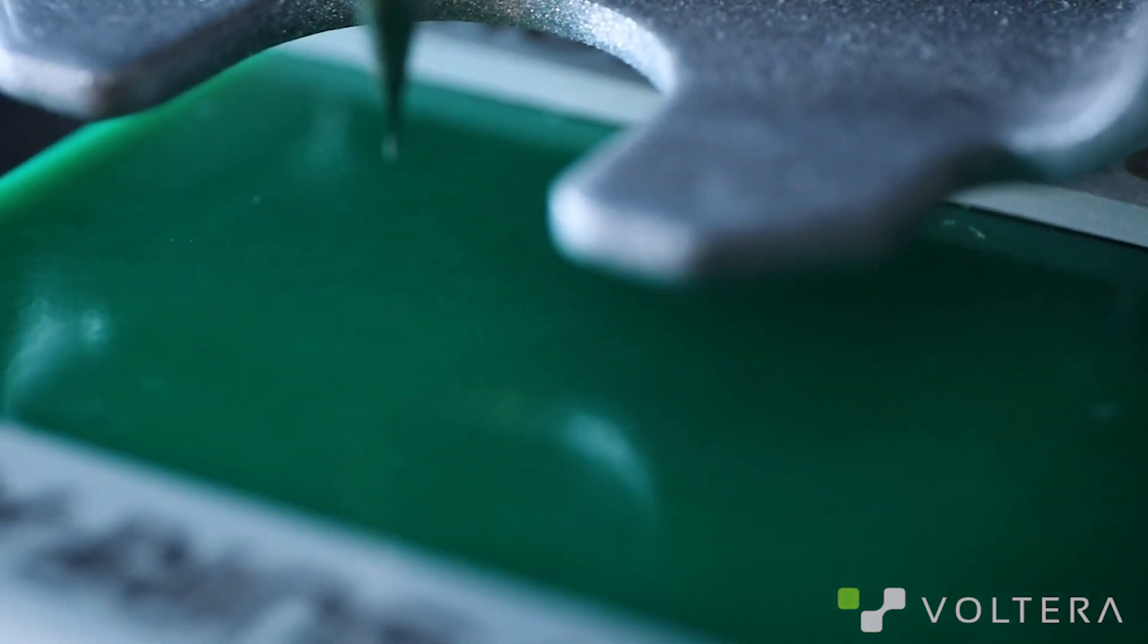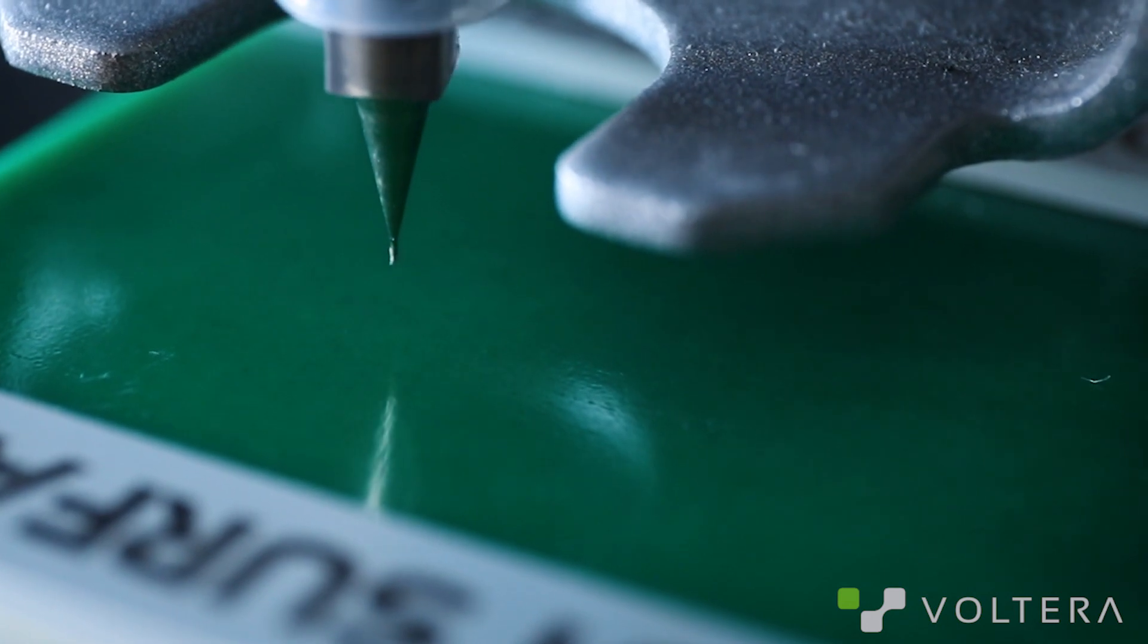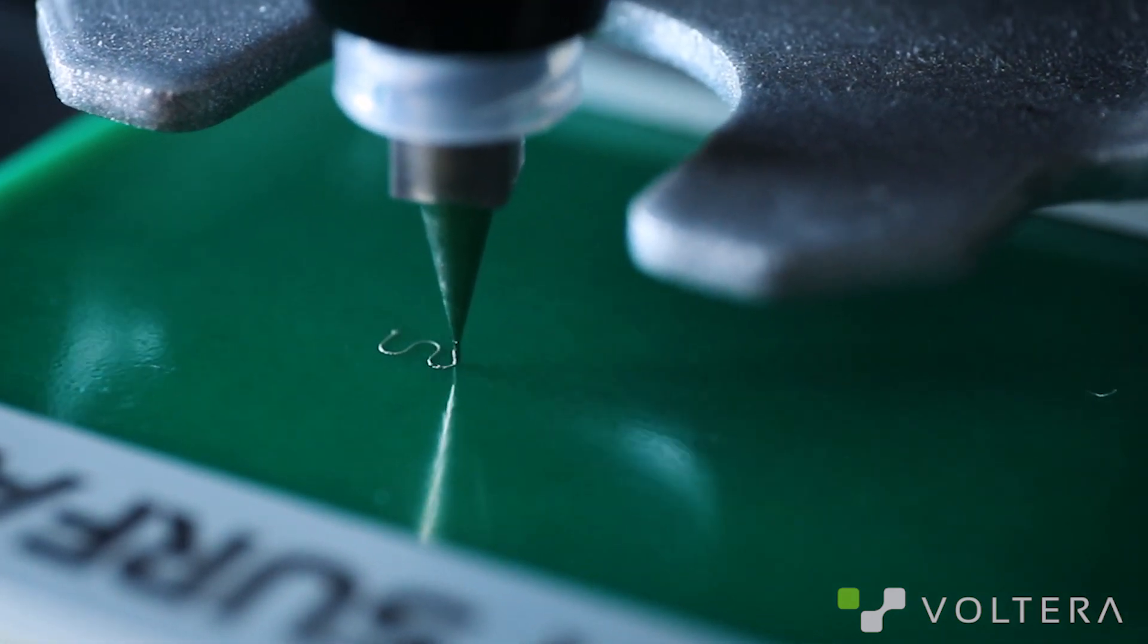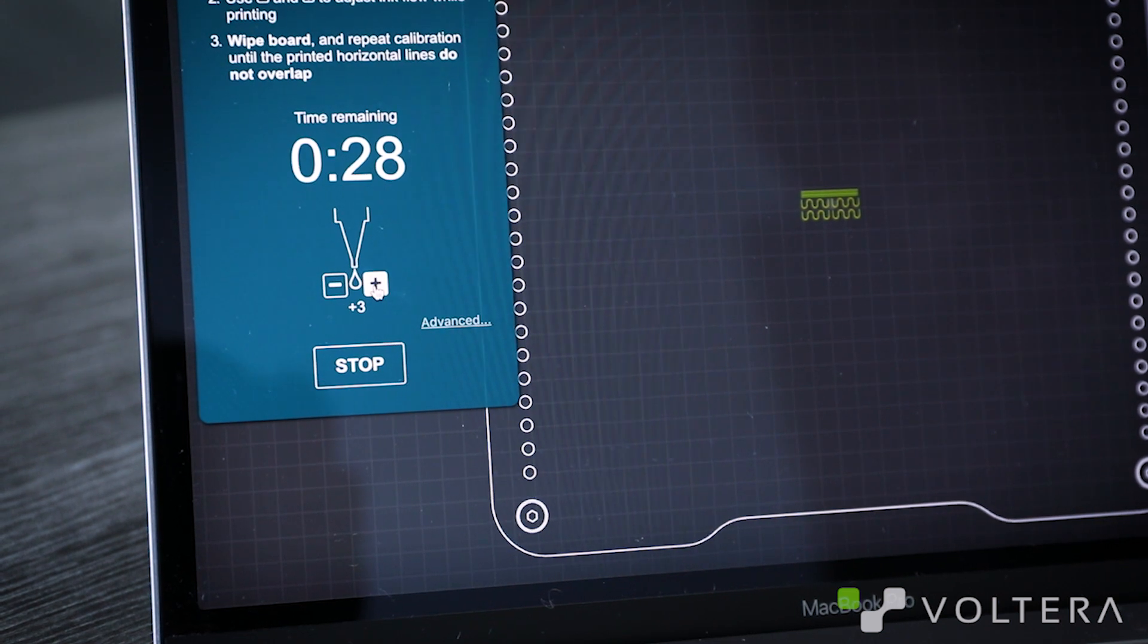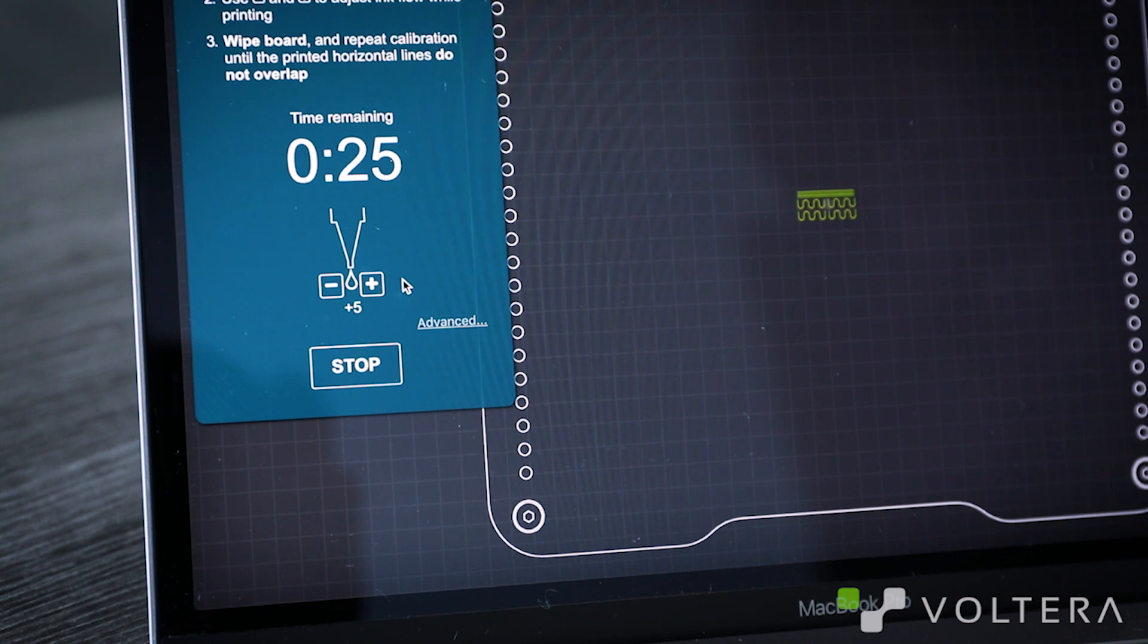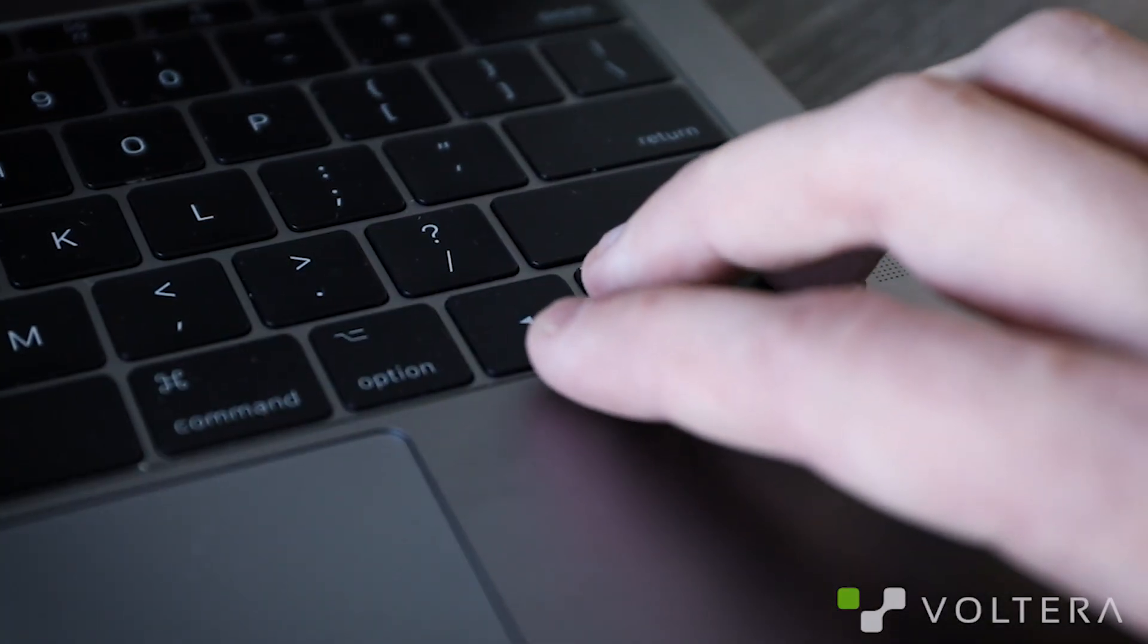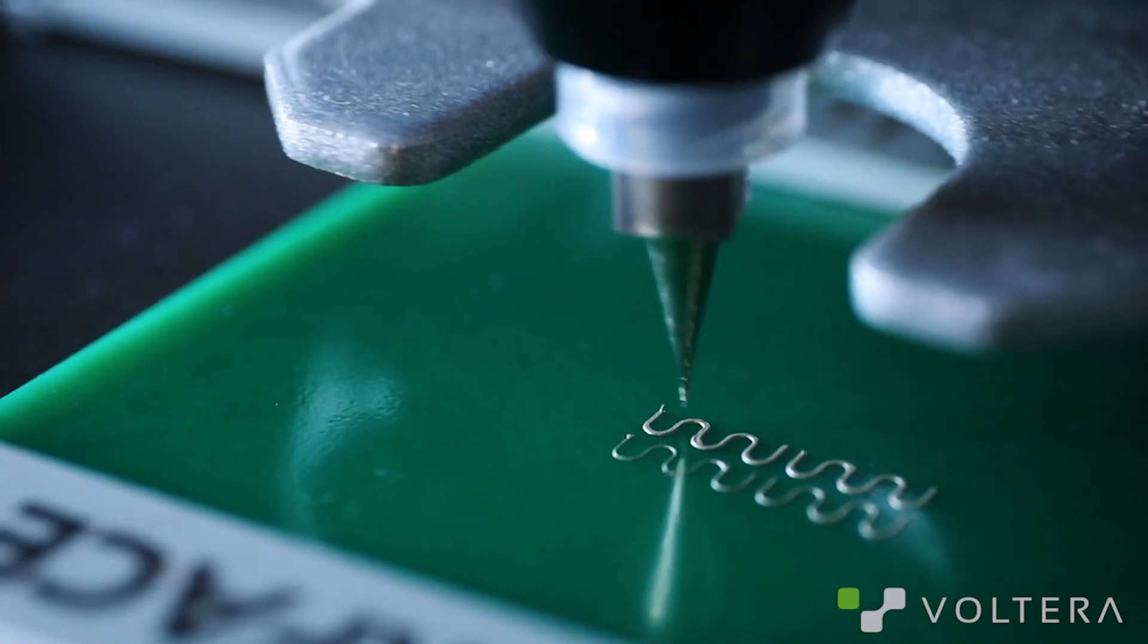While this test pattern is printing, I'm going to keep a close eye on how the traces are dispensing. These traces are a bit too thin. I'm going to increase the flow a bit. I don't need to stop the calibration process. I can do this while printing by increasing the flow value in the software. You can also tap the right and left arrow keys on your keyboard to increase or decrease the flow.